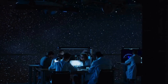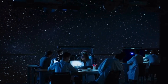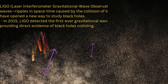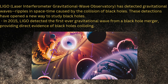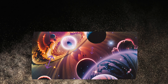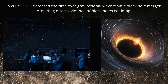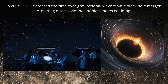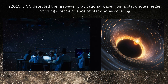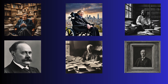LIGO, the Laser Interferometer Gravitational Wave Observatory, has detected gravitational waves — ripples in space-time caused by the collision of black holes. These detections have opened a new way to study black holes. In 2015, LIGO detected the first ever gravitational wave from a black hole merger, providing direct evidence of black holes colliding.